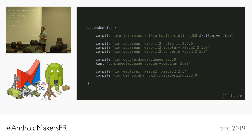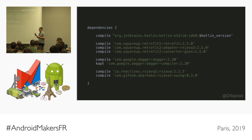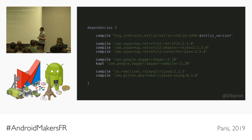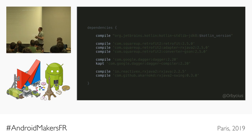The build.gradle file looks quite similar to an Android app. You can have dependencies — Rx, Dagger, whatever you want — but bear in mind this is not an Android application, so be careful about what you include. Also note that we're using 'compile' instead of 'implementation' or 'api', because the Gradle IntelliJ plugin doesn't currently support those, so we have to stick with compile for now.